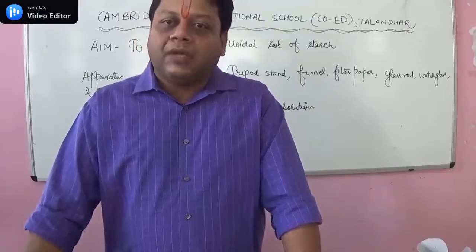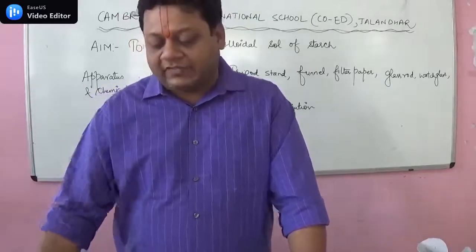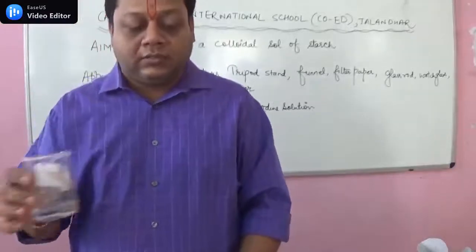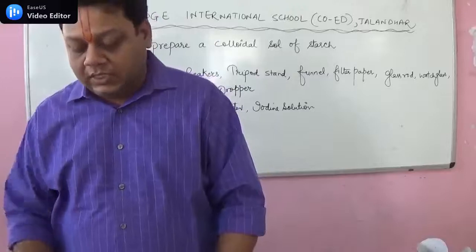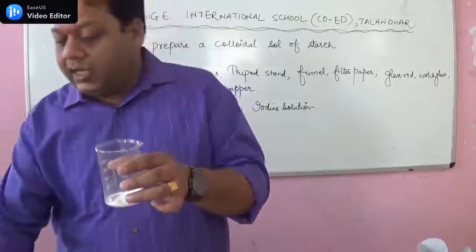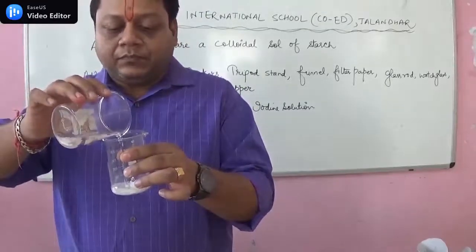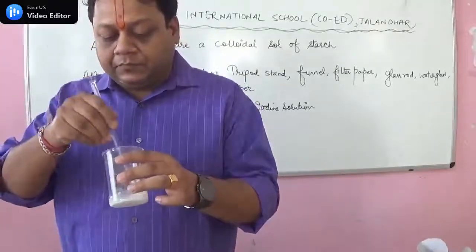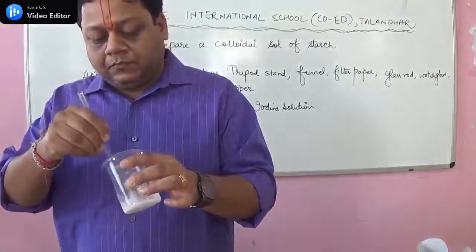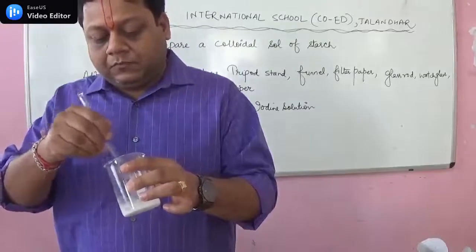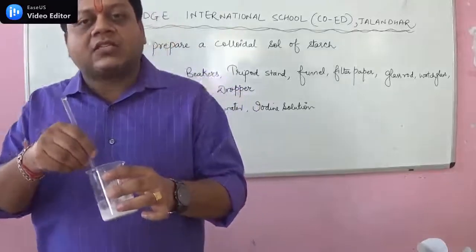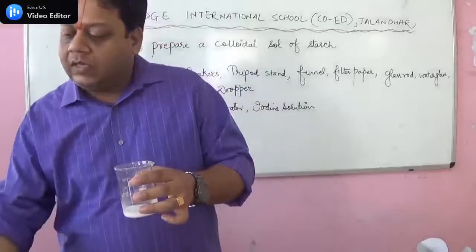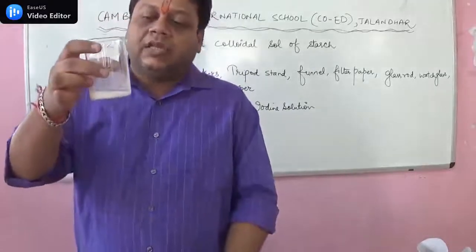Today we are going to prepare a colloidal solution of starch. For that, we have taken nearly 1 gram of starch powder and some distilled water in which we will make a thin paste. Firstly, we put the starch in a beaker with some water and dissolve it completely, stirring until the starch is fully dissolved. As you can clearly see, a thin paste of starch has been made.